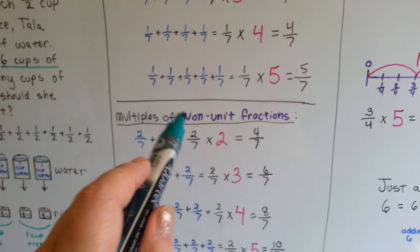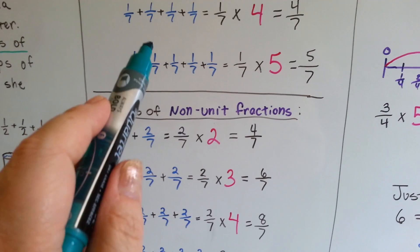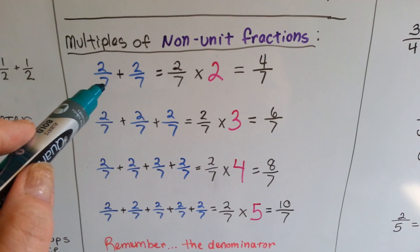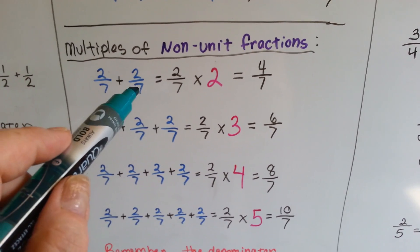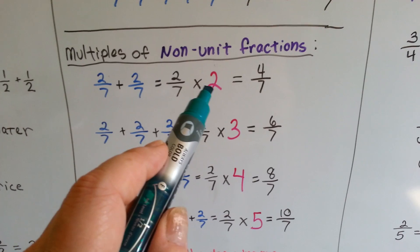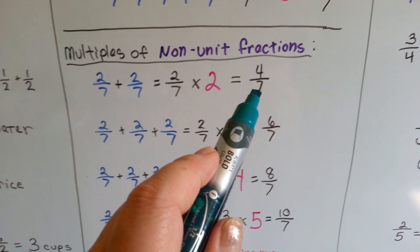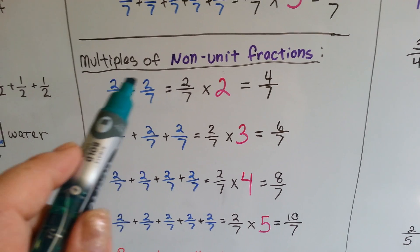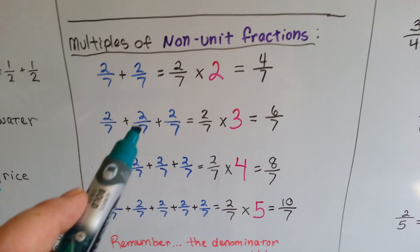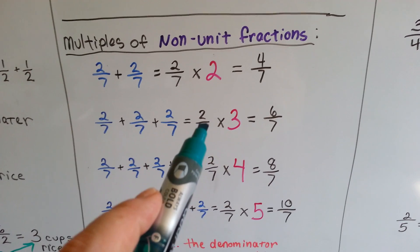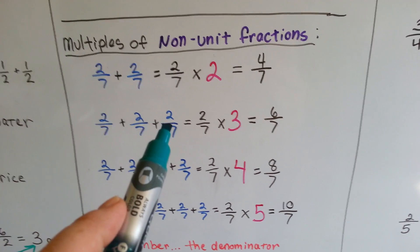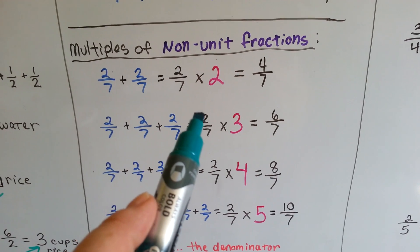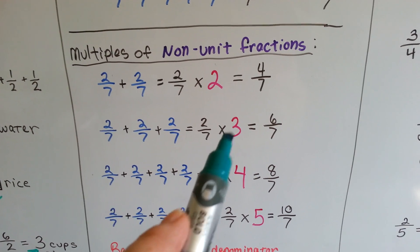So now, multiples of non-unit fractions, because those were unit fractions with a 1 as a numerator. Multiples of non-unit fractions would be like 2 sevenths. We would add 2 sevenths plus 2 sevenths, or it would be 2 sevenths times 2. That would be 4 sevenths. 2 sevenths plus 2 sevenths, we add the numerator and keep the denominator. It would be 4 sevenths. If we had 3 of them, 2 sevenths plus 2 sevenths plus 2 sevenths, it would be the same as 2 sevenths times 3. We would add up the numerators, which would be 6, or we would just multiply the 2 numerator times that 3 and keep the denominator.